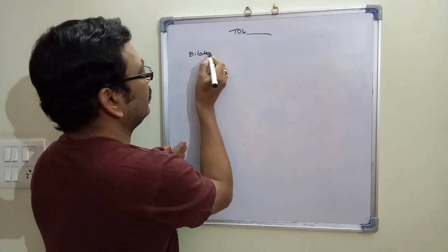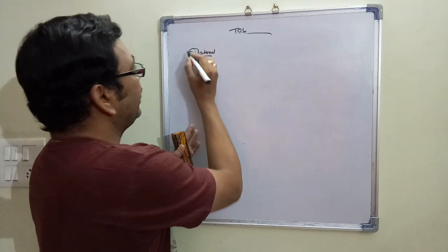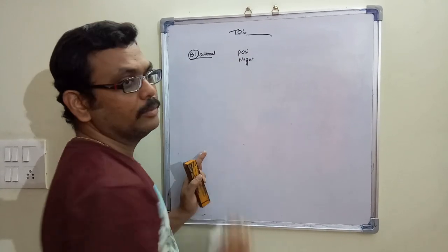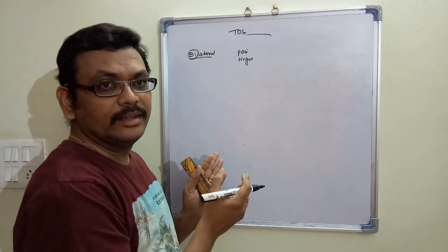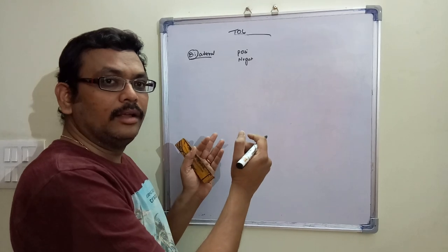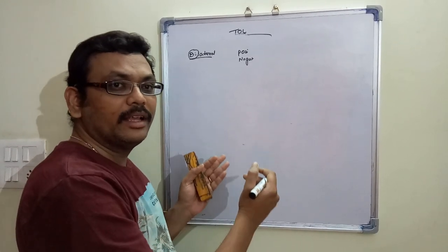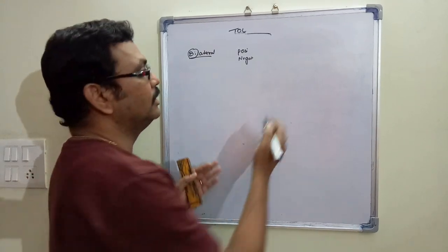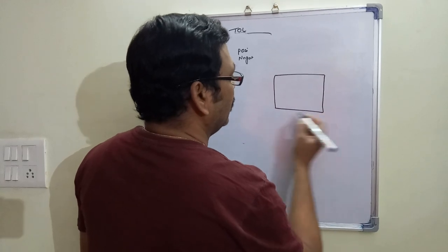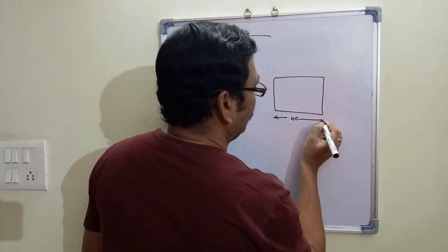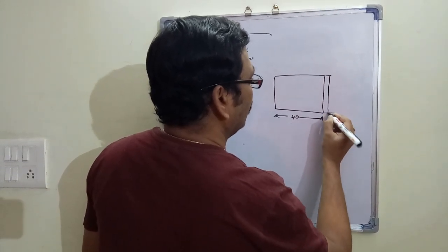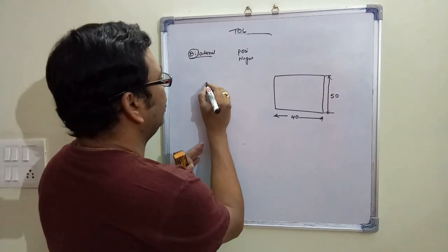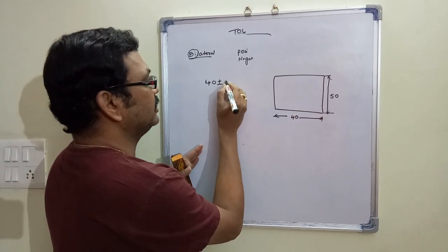The next type is bilateral tolerance. As the name indicates, bilateral means two — the dimension can vary in both the positive and negative directions. That means the dimension can increase or decrease. Consider the same plate example of 40 mm × 50 mm with a tolerance of 40 ± 0.5.